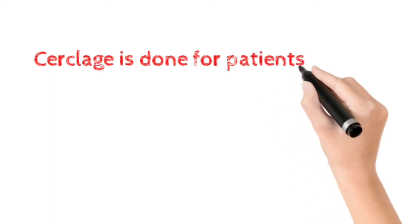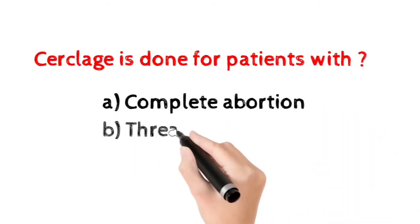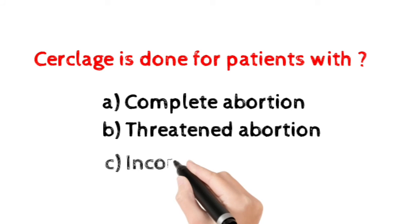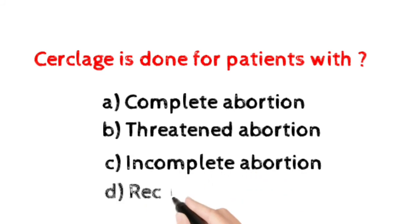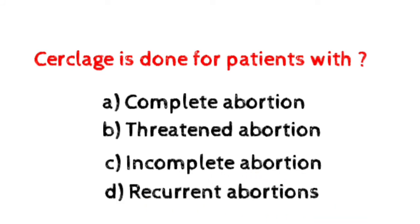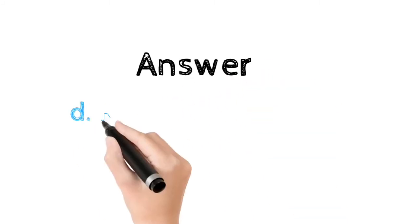Number fourteen: Cerclage is done for patients with? Option A: complete abortion. Option B: threatened abortion. Option C: incomplete abortion. Option D: recurrent abortions. Here the correct answer is option D, recurrent abortion.